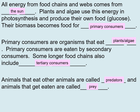Here are the answers. All energy in food chains and webs comes from the sun. Plants and algae use this energy in photosynthesis to produce their own food or glucose. Their biomass becomes food for primary consumers. Primary consumers are eaten by secondary consumers. Some longer food chains also include tertiary consumers. Animals that eat other animals are called predators, and animals that get eaten are called prey.